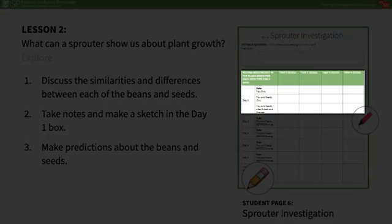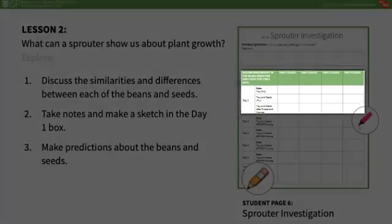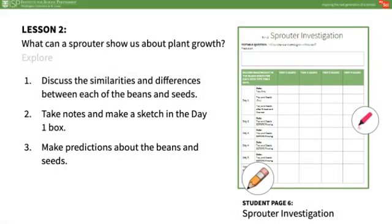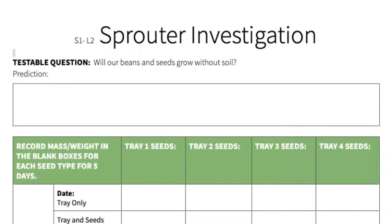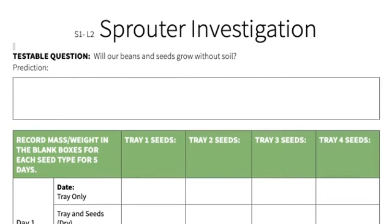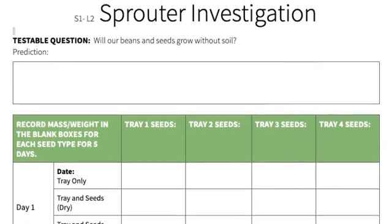Students should take notes in their science journals, including a sketch of each kind of bean or seed on student page 6 in the Day 1 box. If you have not taught how to find the mass yet, you can do so prior to or during this investigation — mass is measured in grams. Ask students to use the sprouter data collection and sprouter observation sheets on student pages 6 and 7 to make predictions about the beans and seeds. If students are stuck on what kind of predictions to make, you can start them off with the question: Will the beans and seeds gain mass without soil? Encourage them to make additional predictions as well.